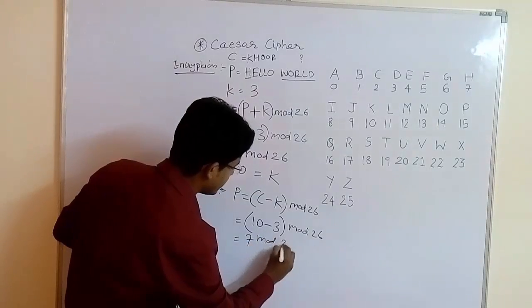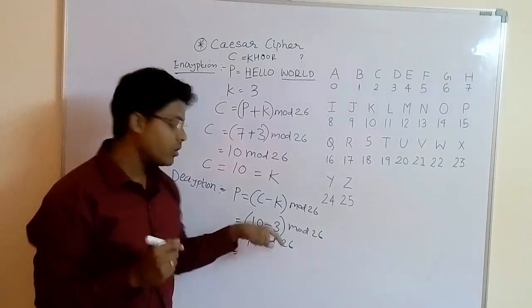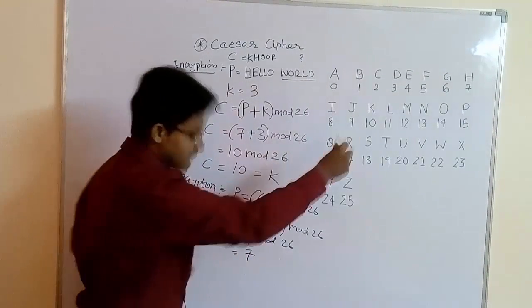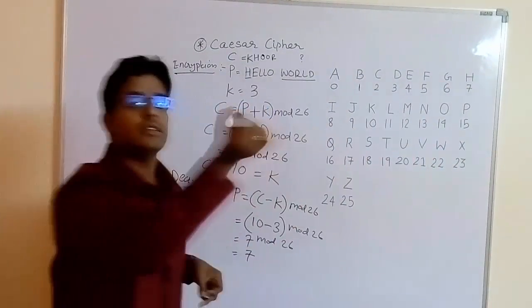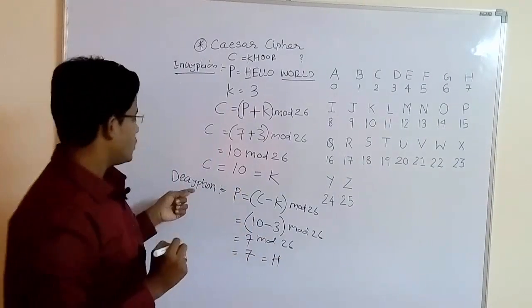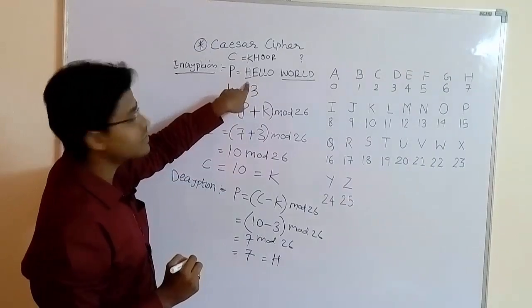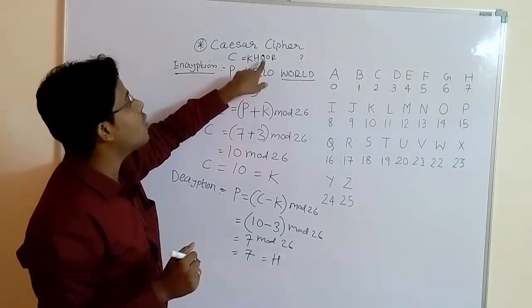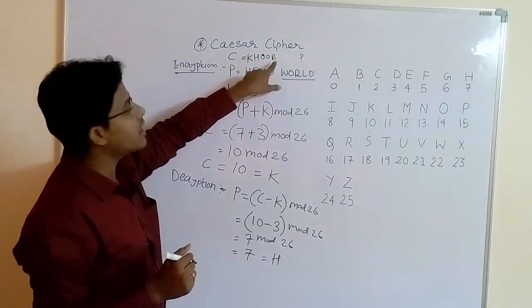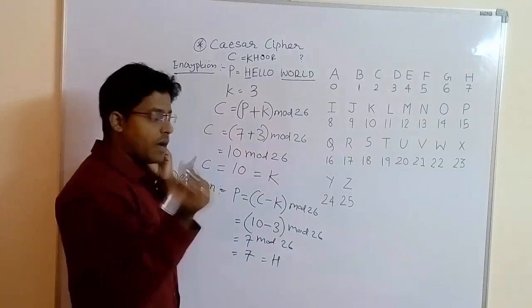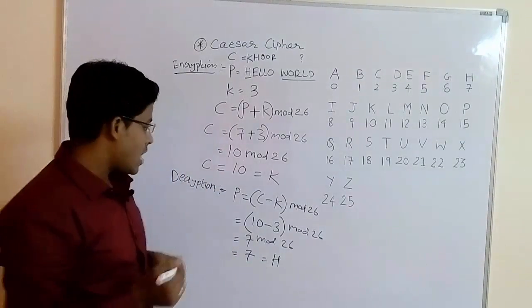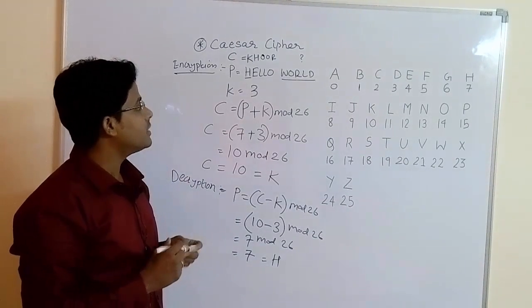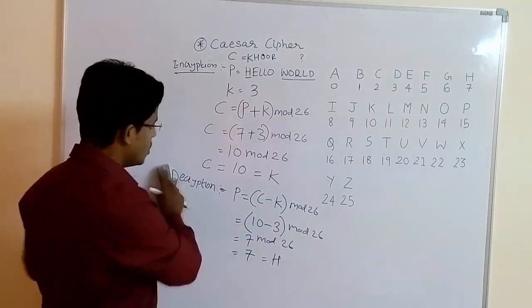For the first cipher text letter K, the number for K is 10. So: 10 minus 3 mod 26 equals 7 mod 26. Since 7 is smaller than 26, the answer is 7. Looking up number 7 in our table gives H. So the decryption of K is H. Similarly, decryption of H gives E, decryption of O gives L, and decryption of R gives O. This completes the decryption of 'hello'. I hope you understood the Caesar cipher method.